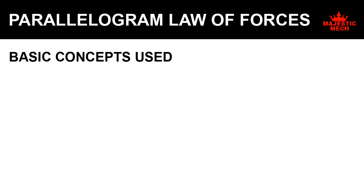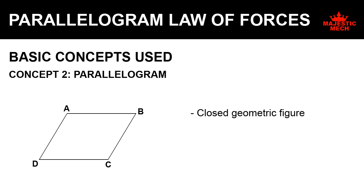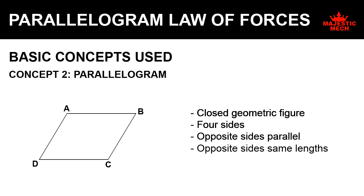The second concept we are going to look at is a parallelogram. A parallelogram is a closed geometric figure with four sides. Opposite sides of a parallelogram are parallel to each other and are equal in length. In this figure, side AB and side CD are opposite to each other — AB and CD are parallel and equal in length. Similarly, sides AD and BC are parallel to each other and have the same length.